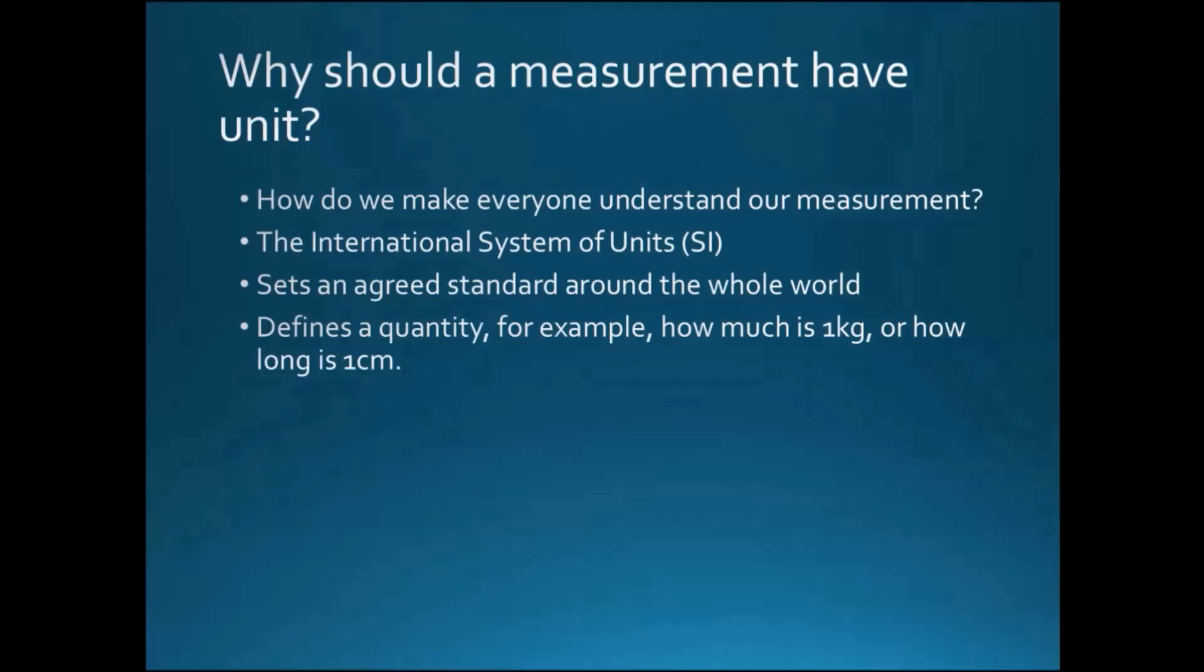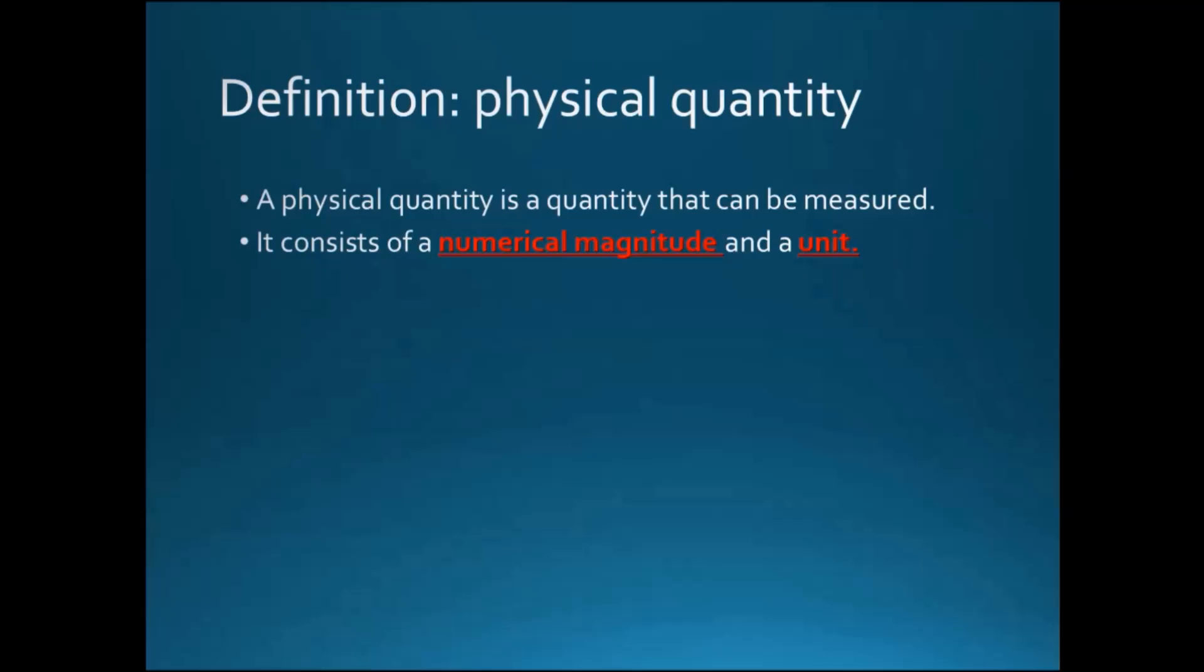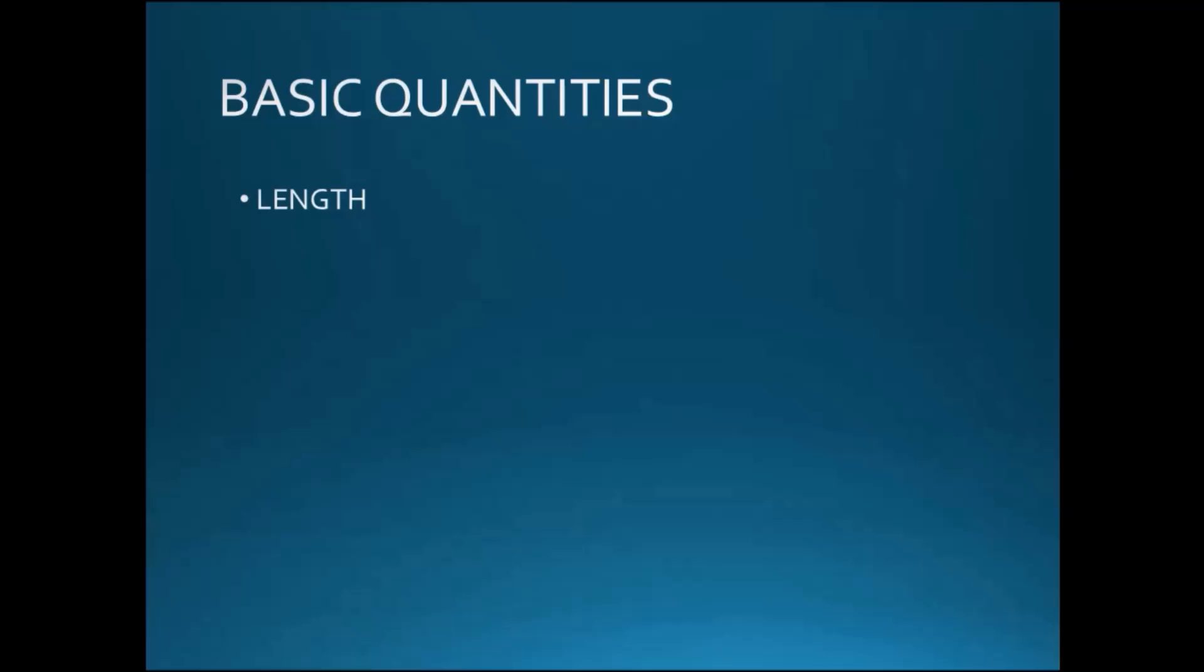The definition of a physical quantity is a quantity that can be measured. It consists of a numerical magnitude and a unit. Some basic quantities are length, mass, time, temperature, and electric current.